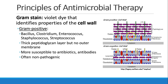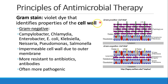Here we see a picture of a gram-positive cell wall — there's your phospholipid bilayer, and here is your large cell wall. On the other hand, we have gram-negative bacteria — many kinds: campylobacter, chlamydia, enterobacter, E. coli, Klebsiella, Neisseria, Pseudomonas, Salmonella. These bacteria have an impermeable cell wall due to an outer membrane. They tend to be more resistant to antibiotics and antibodies, and tend to be more pathogenic, and only exist when something is wrong. Here you see their phospholipid bilayer, a very small cell wall, and then another outer membrane.